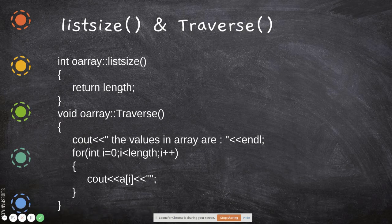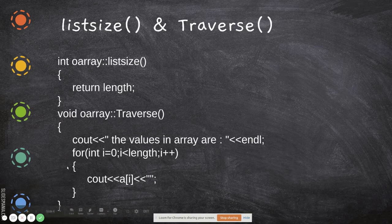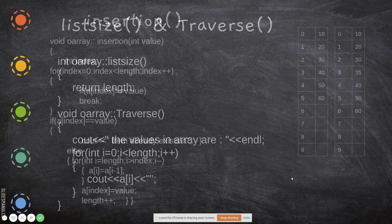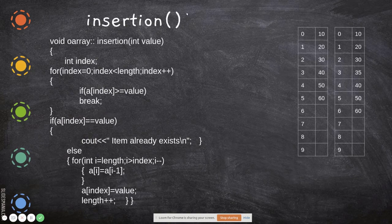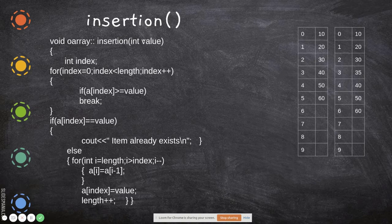'listSize' simply returns 'length'. For example, if there are currently five elements in the array, it returns five — it returns an integer value. 'traverse' does not return anything; it just prints all the values in the array. Now let's look at insertion.